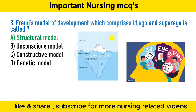The id is driven by the pleasure principle, which strives for immediate gratification of all desires, wants, and needs. The ego represents one component of our full personality and is based on the reality principle, which strives to satisfy the id's desires in realistic and socially appropriate ways. The primary action of the superego is to suppress any urges or desires of the id that are considered wrong or socially unacceptable.